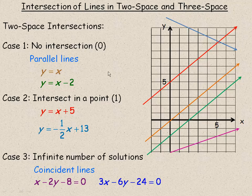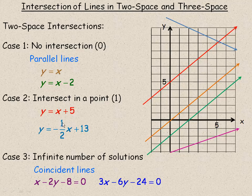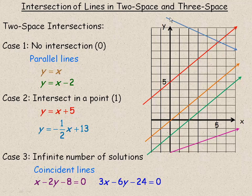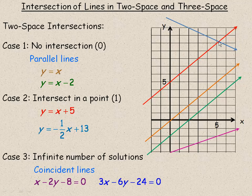So for example, y equals x plus 5, that's the red line here, starts at 5 on the y-axis, has a slope of 1. And y equals negative 1 half x plus 13. It starts with a y-intercept at positive 13 up here, has a slope of negative 1 half, and so they intersect in that one point right there. So there's one common point or one intersection point for those two lines.